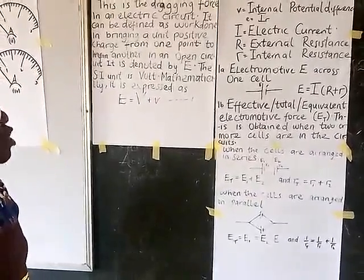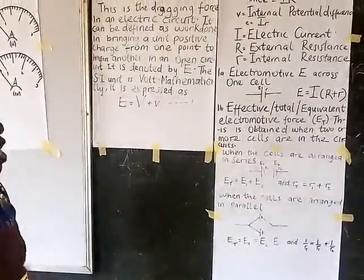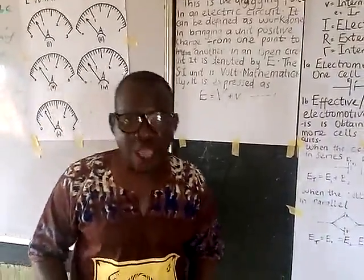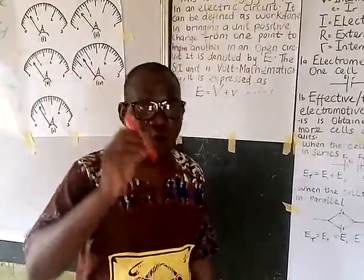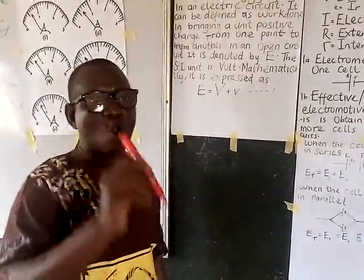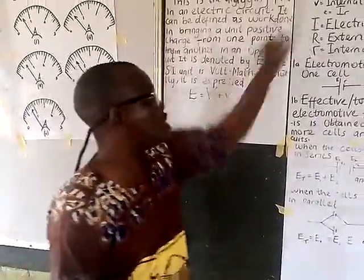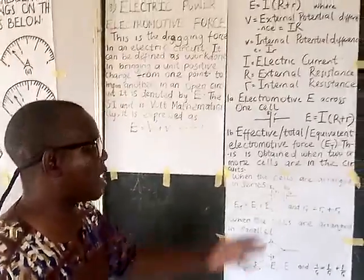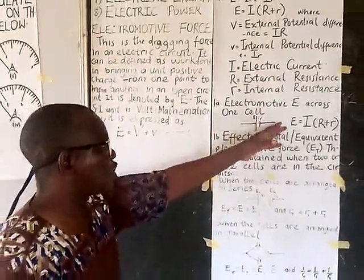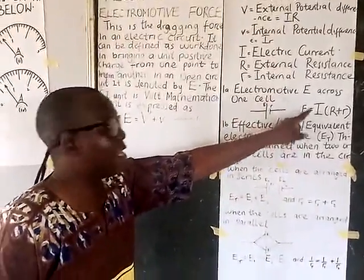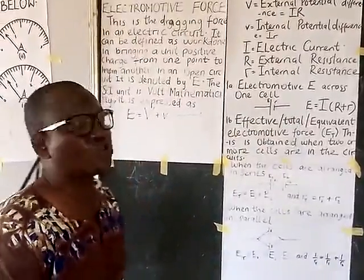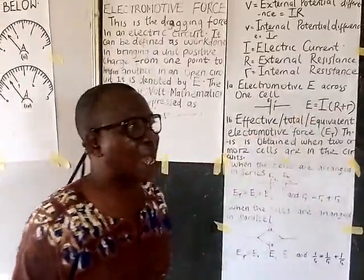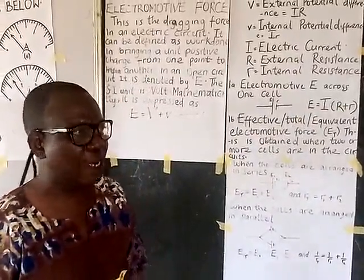Now that we have defined electromotive force, how do we calculate it? If you have just one cell, electromotive force E can be calculated using E = I(R + r), where you are given current, external resistance, and internal resistance.